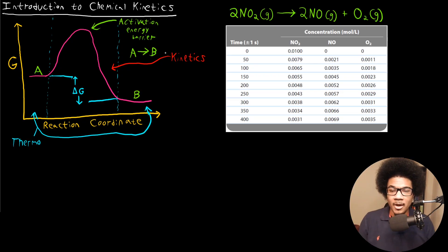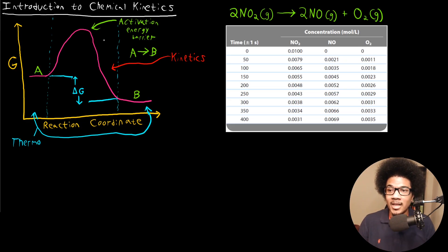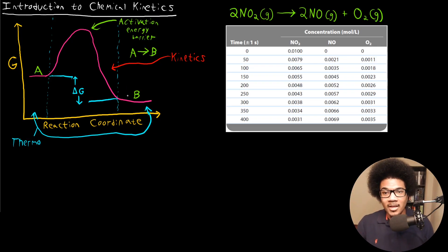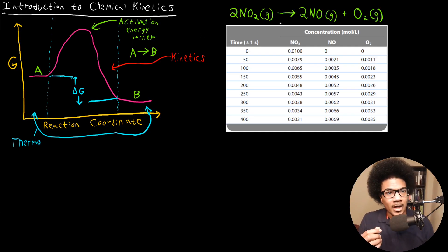The height of the activation energy barrier determines how fast the reaction is going to happen. If the barrier is lower, it'll happen more quickly; if the barrier is higher, that reaction will happen a lot slower. Kinetics is described by what's going on in the middle region of the reaction coordinate diagram. So let's talk about how we can actually look at a chemical reaction and describe its rate. Since chemical kinetics is concerned with reaction rates, we need a solid way to define them.